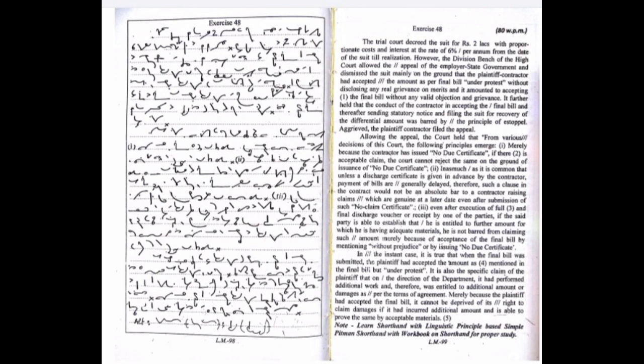First, merely because the contractor has issued a no due certificate, if there is an acceptable claim, the court cannot reject the same on the ground of issuance of no due certificate. Second, inasmuch as it is common that unless a discharge certificate is given in advance by the contractor, payment of bills are generally delayed, therefore such a clause in the contract would not be an absolute bar to a contractor raising claims which are genuine at a later date, even after submission of such no claim certificate. Third, even after execution of the full and final discharge voucher or receipt by one of the parties, if the said party is able to establish that he is entitled to further amount for which he is having adequate materials, he is not barred from claiming such amount merely because of acceptance of the final bill.